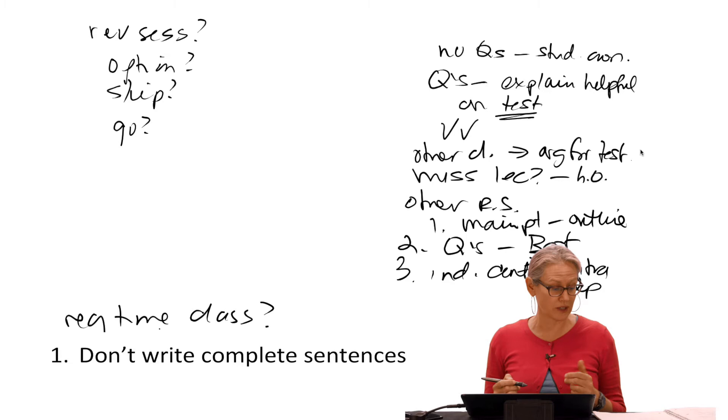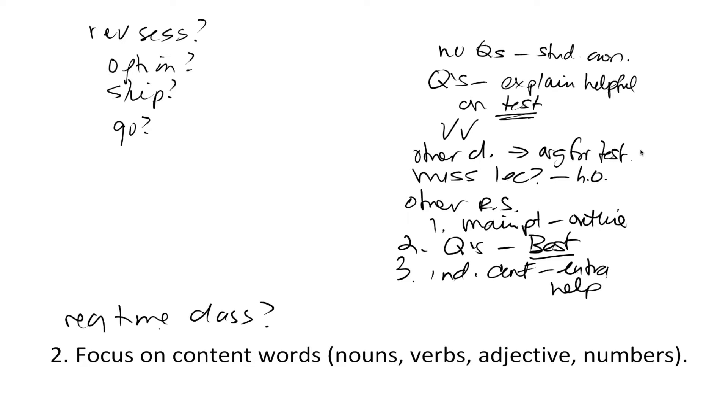And so how do you avoid not writing complete sentences? Well, number two, the most important thing is content words only. So you'll notice that I used verbs, I used adjectives, I used nouns,